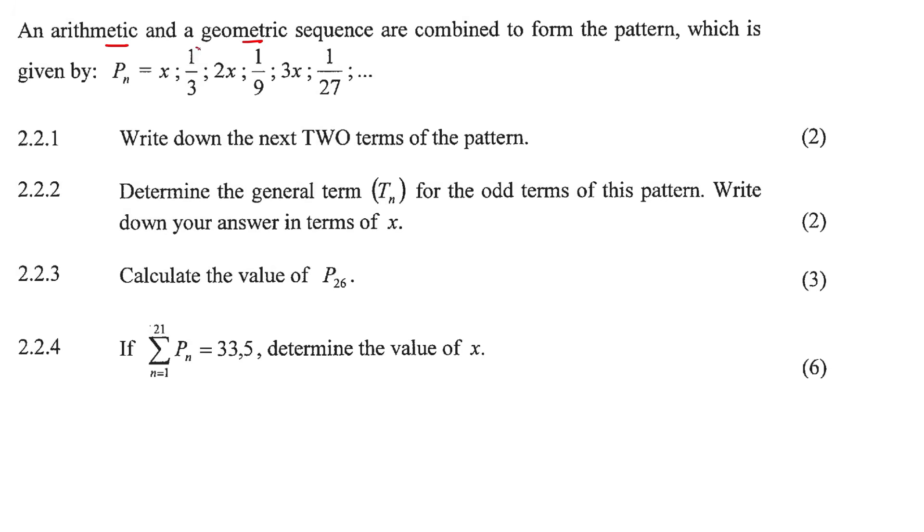Now I can already see that this term and this term and this term, they are the geometric. How do I see that? Well I know that to go from here to here, you have to multiply by 1 over 3, and to go from here to here, you also multiply by 1 over 3. If you didn't see that, you can also say this term divide this term and you'll get 1 over 3, and then if you say this term divide this term, you would also get 1 over 3. So this, this and this, that's the geometric.